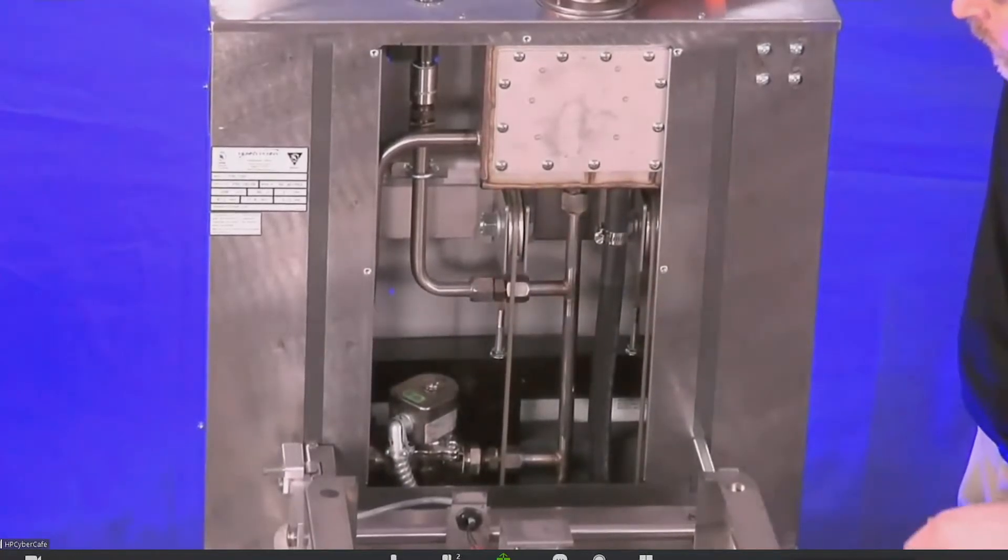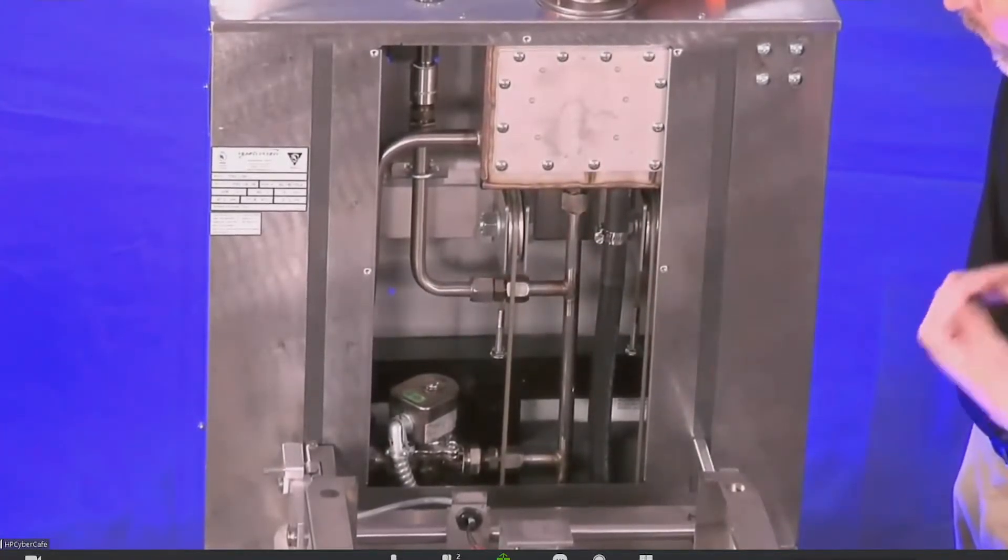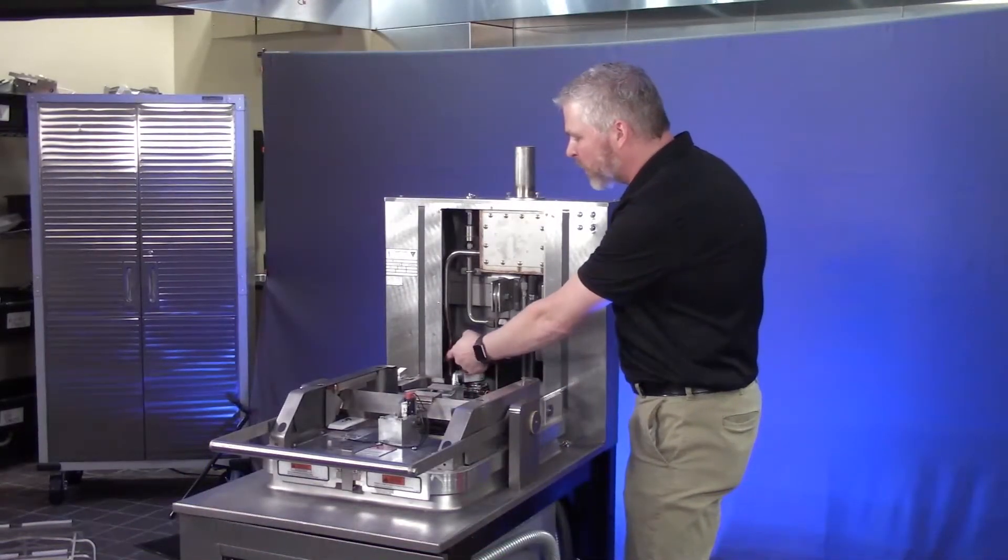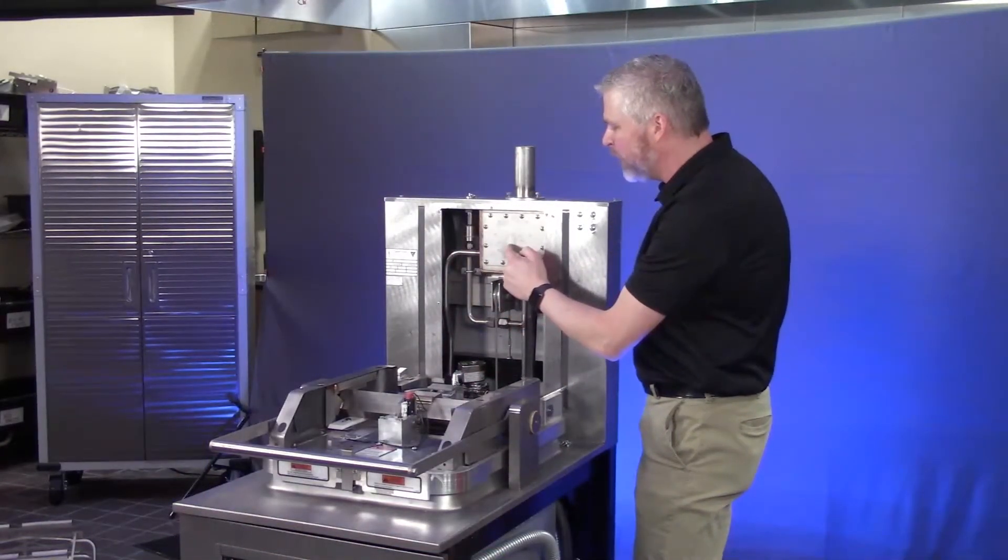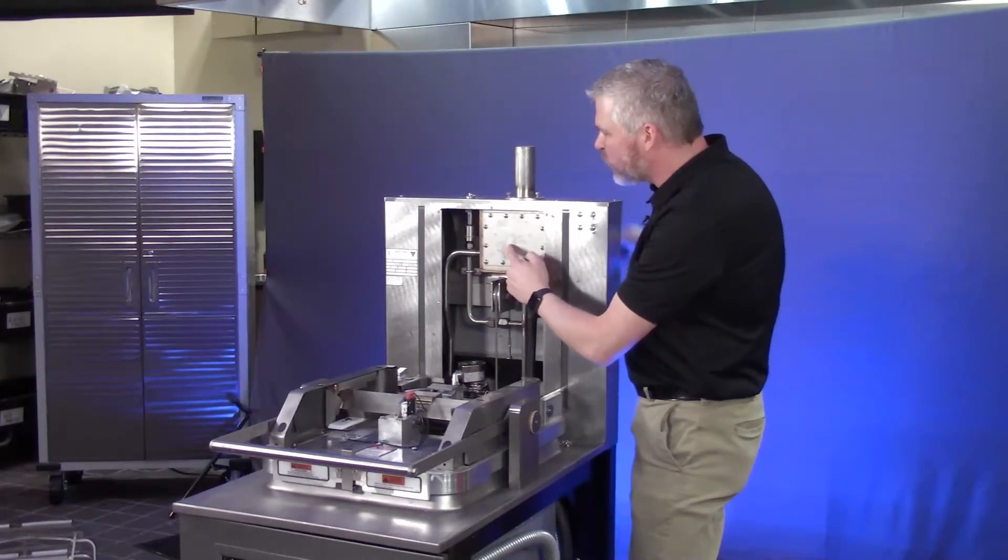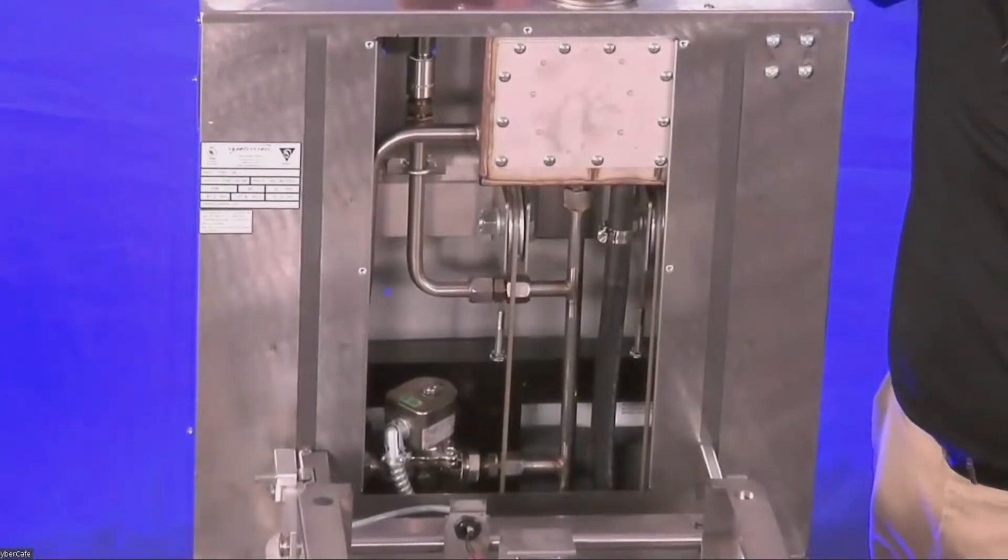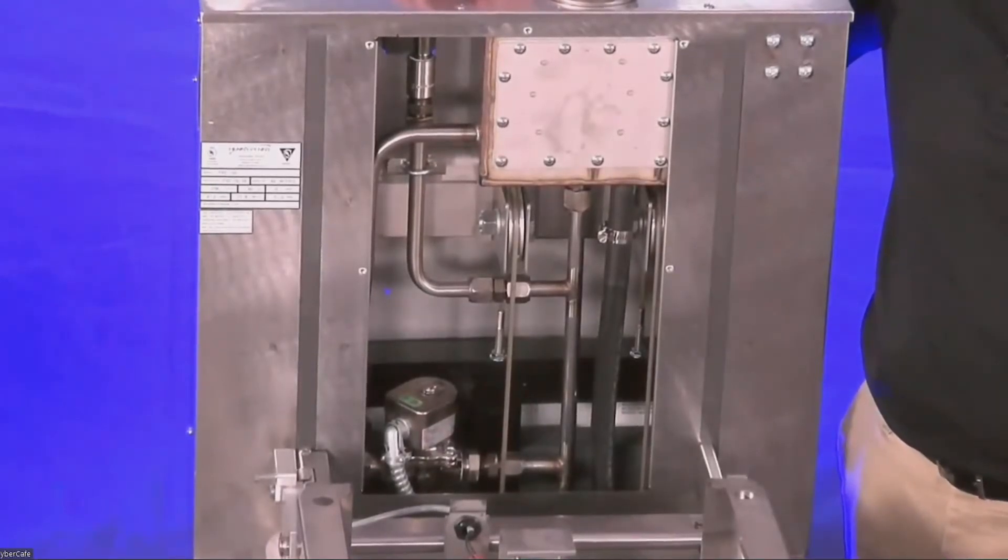If our pressure solenoid is obstructed where it can't properly vent to this steam box, then we may have a situation where our safety relief valve starts to blow steam out the back of the fryer. If that happens, that tells us that we're hitting pressures greater than 14 and a half psi.